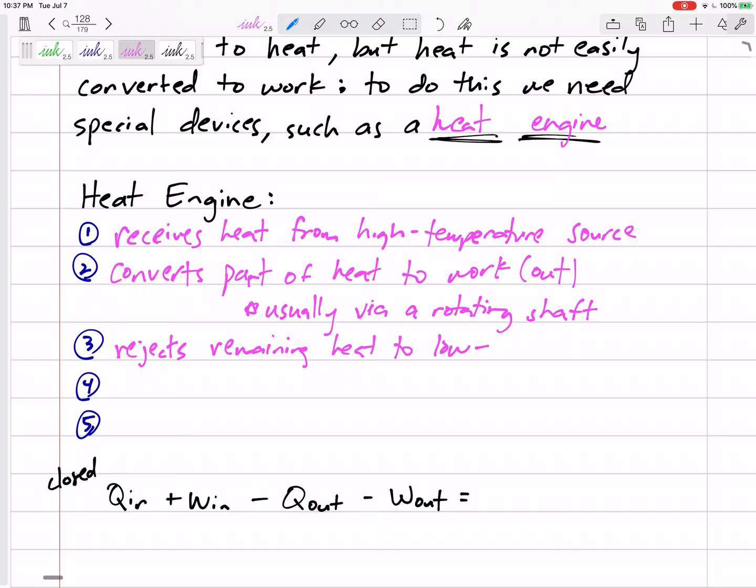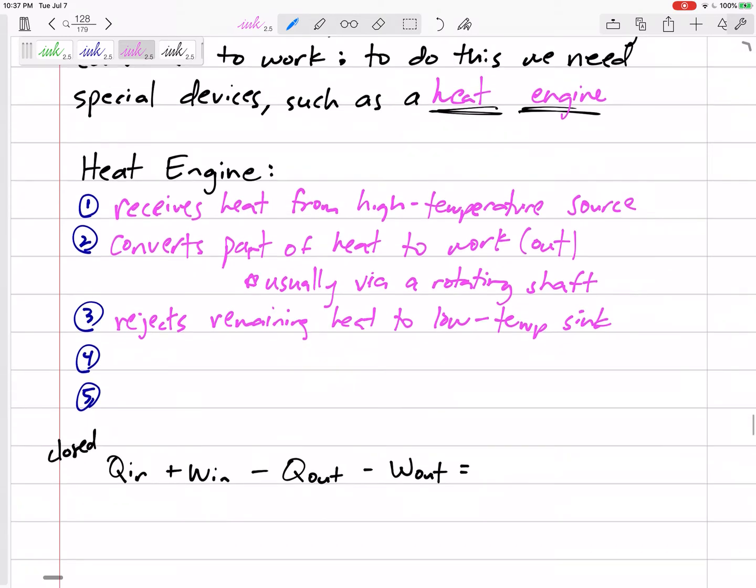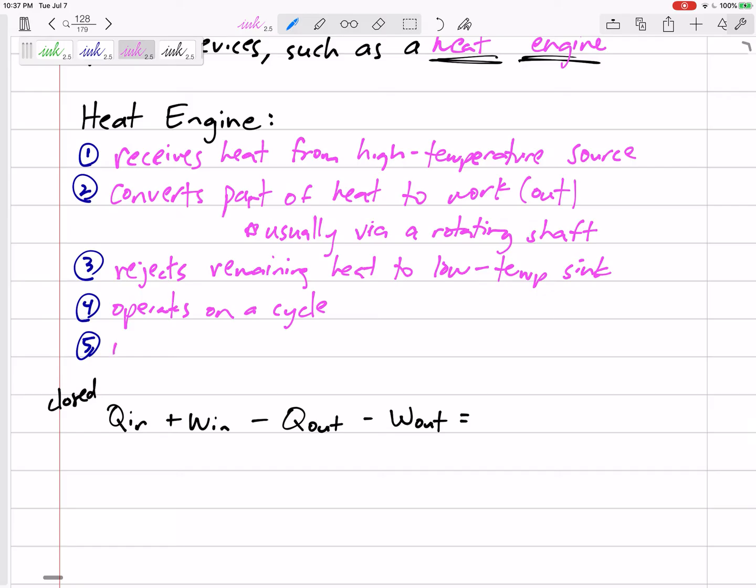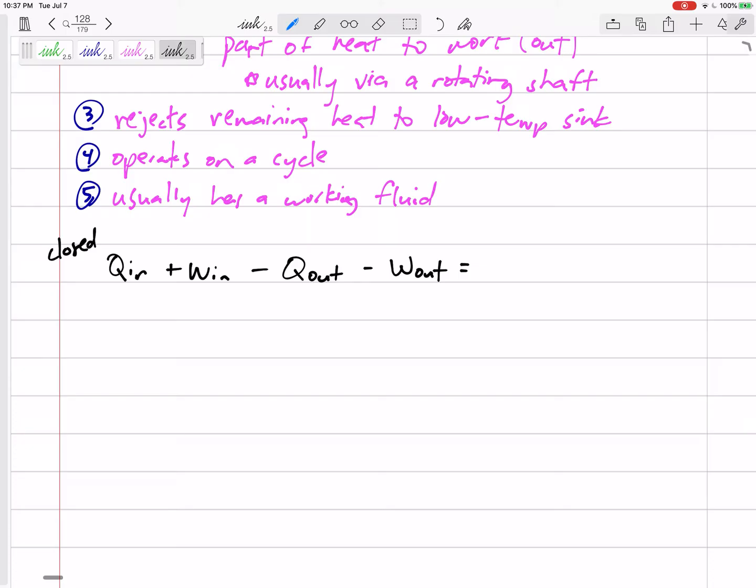It operates on a cycle, so whatever states and properties it started with, after it gets the heat, converts to work, and rejects the heat, it comes back to its starting conditions. It usually has a working fluid—refrigerant, water, air—and usually it's a closed system or we think about it as a closed system.